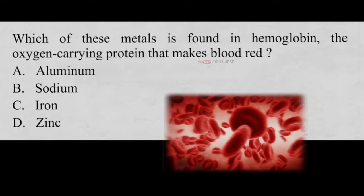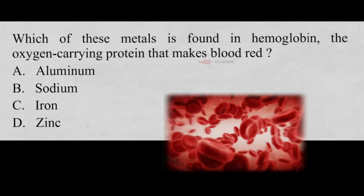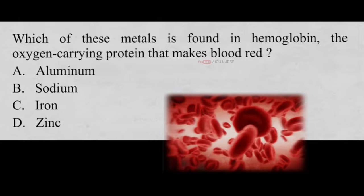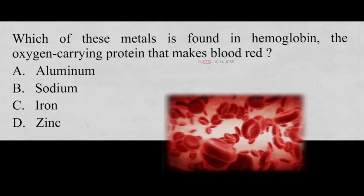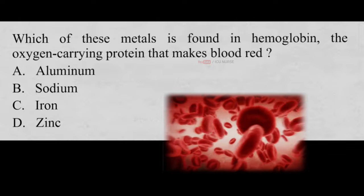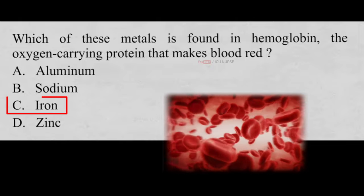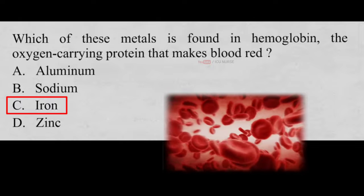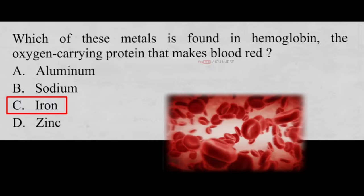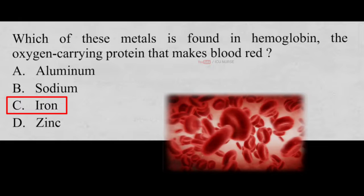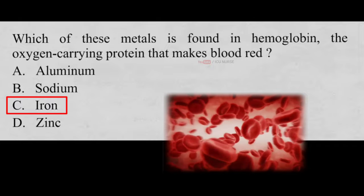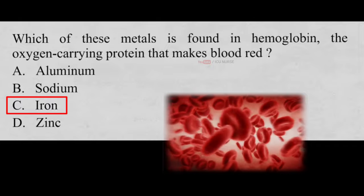Which of these metals is found in hemoglobin, the oxygen-carrying protein that makes blood red? A. Aluminium, B. Sodium, C. Iron, D. Zinc. And the correct answer is C, Iron. The human body needs iron to make the oxygen-carrying proteins hemoglobin and myoglobin. Iron has the property of reflecting red light, and because there is so much iron in our blood, blood looks red.